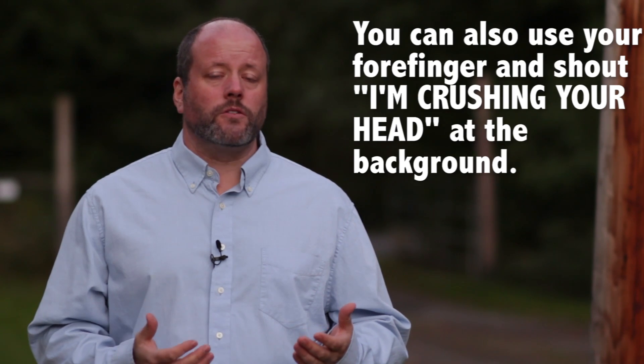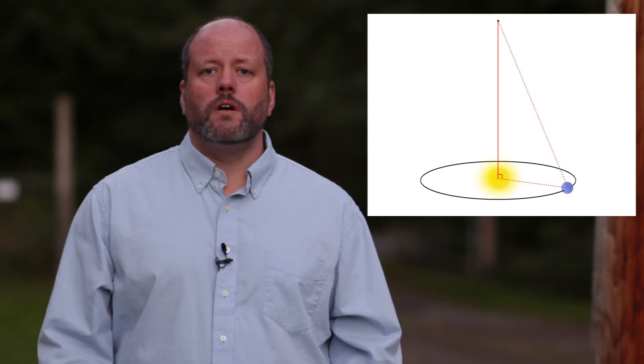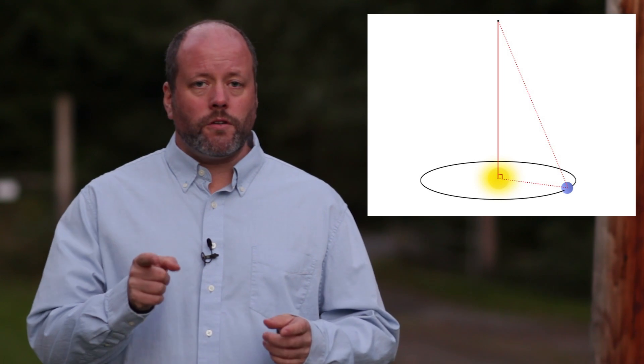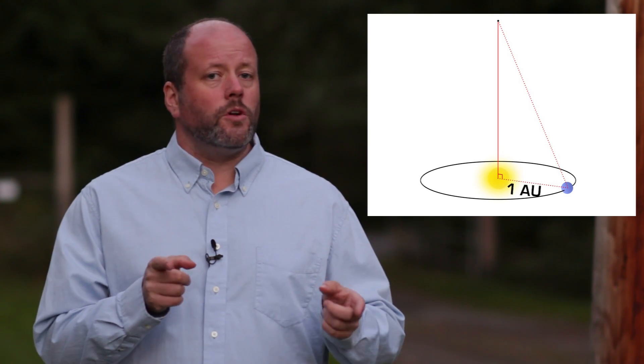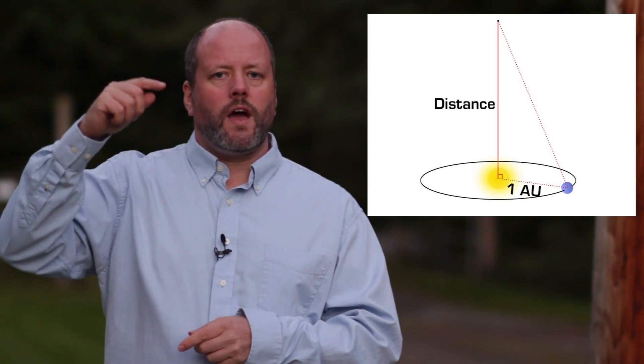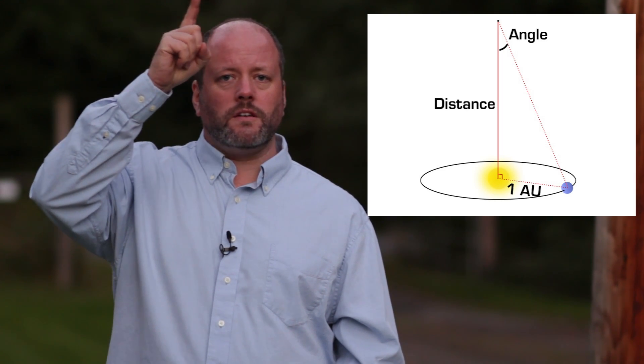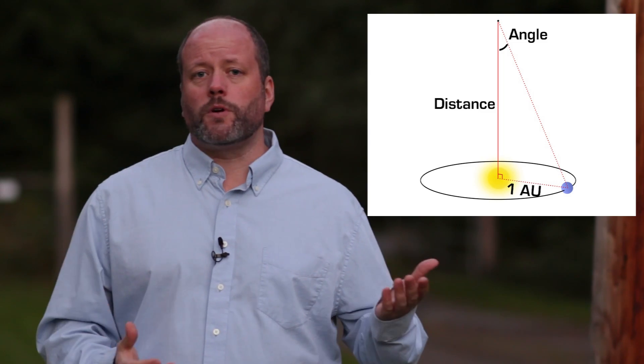By measuring the changing angles from the observer to the star and the background Universe, you can calculate the distance. Imagine a right angle triangle. The bottom of the triangle is the distance from the Earth to the Sun, also known as an astronomical unit. The side of the triangle is the distance from the Sun to the star, and then there's the angle required to make the star appear to move one arcsecond in the sky. The sky is broken up into 360 degrees, each degree is broken up into 60 arcminutes, and there are 60 arcseconds in an arcminute. One arcsecond is 1/3,600th of the sky.